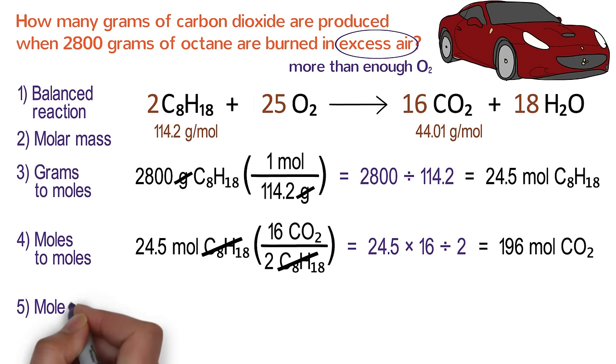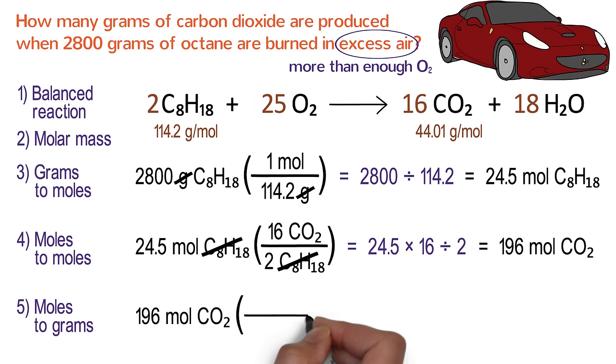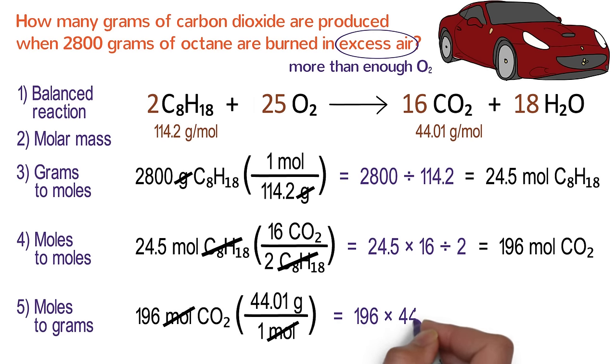In the last step, we will convert moles of carbon dioxide to grams. Go ahead and write down our answer from the previous step, 196 moles of carbon dioxide, and multiply it by a conversion factor fraction. The molar mass of carbon dioxide is our conversion factor. Since we are starting with moles, write 1 mole on the bottom. And because we are solving for grams, write 44.01 grams in the top. Moles on the top and bottom cancel out, and we multiply 196 times 44.01 to get our final answer of 8,600 grams of carbon dioxide.